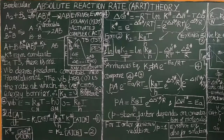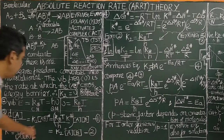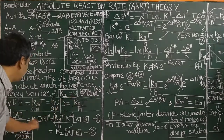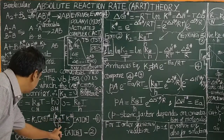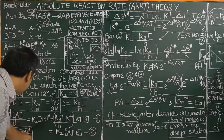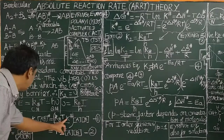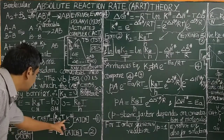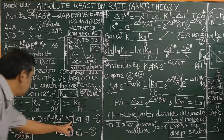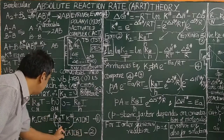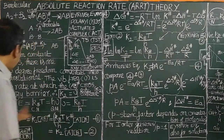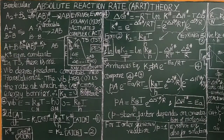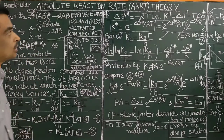So K2 equals ν times K‡. Since ν equals kBT divided by h, substituting gives K2 equals (kBT/h) × K‡. This is the rate of the reaction for this bimolecular reaction, using the equilibrium constant for the equilibrium process.